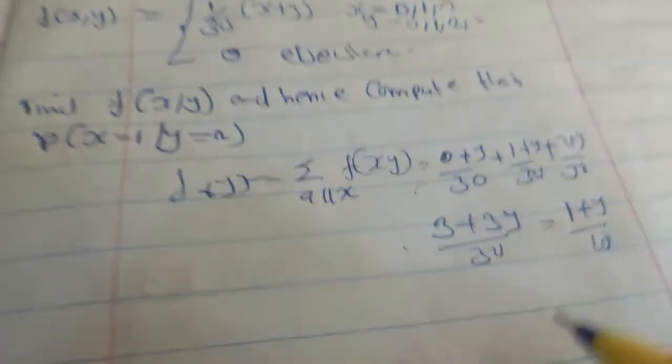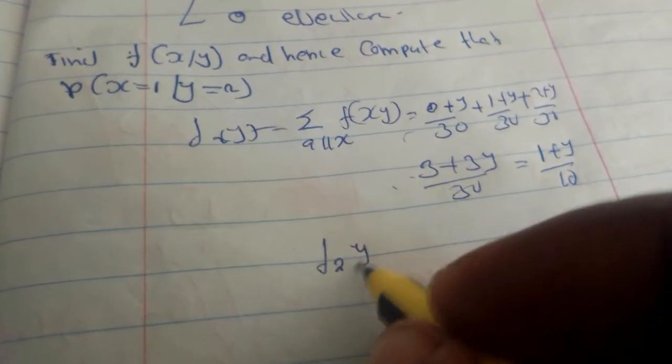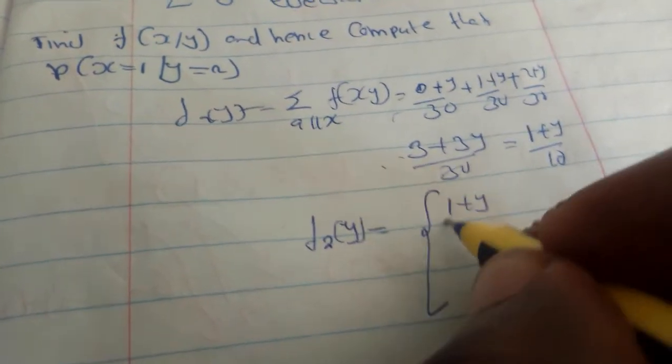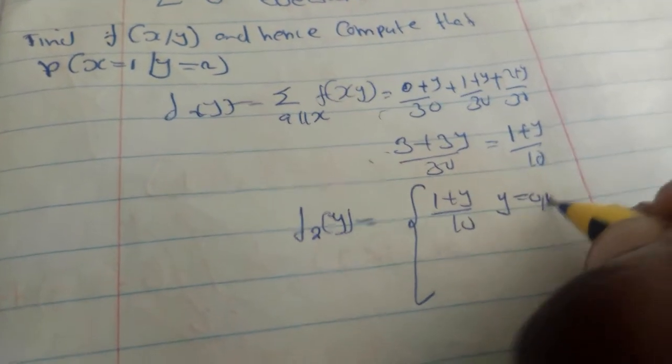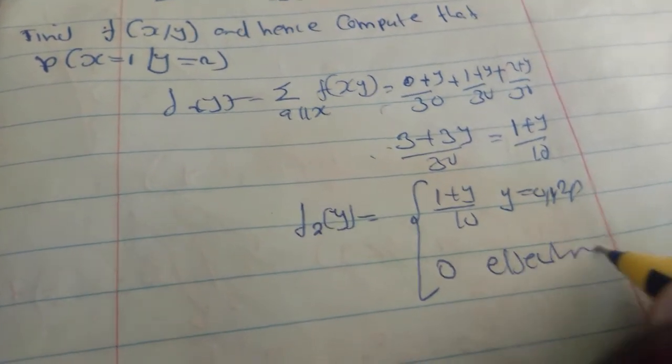That means this one is equal to 1 plus y over 10. We are going to factorize out 3. So f2(y) is equal to 1 plus y over 10, where y is equal to 0, 1, 2, 3, and 0 elsewhere.